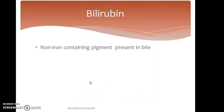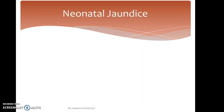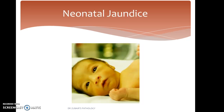Bilirubin is a non-iron-containing pigment present in bile. The normal level of bilirubin is less than 1 milligram per deciliter. Excess bilirubin results in jaundice, which is of three types: unconjugated, biphasic, and conjugated — which is a separate topic to be covered in the next lecture. Neonatal jaundice can be of two types: physiological jaundice and pathological jaundice.